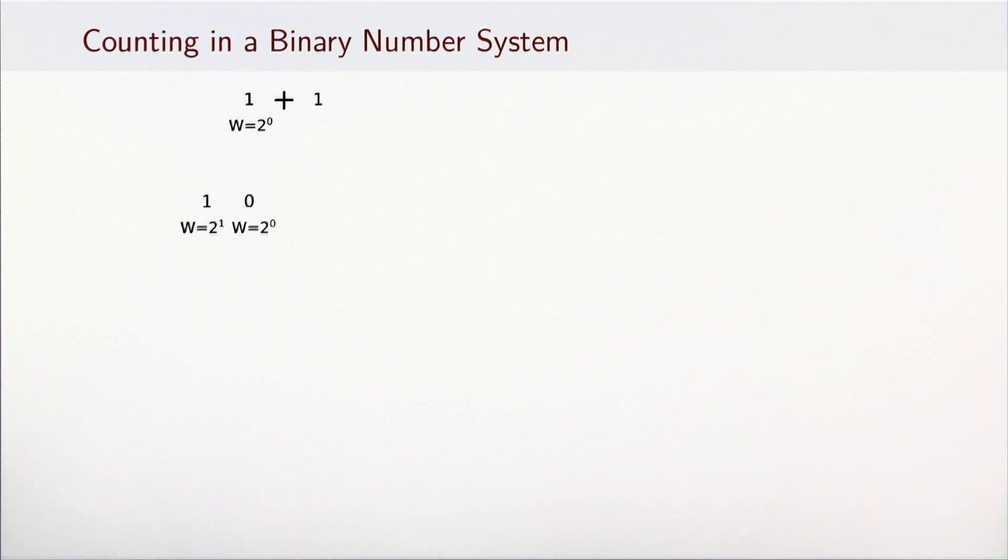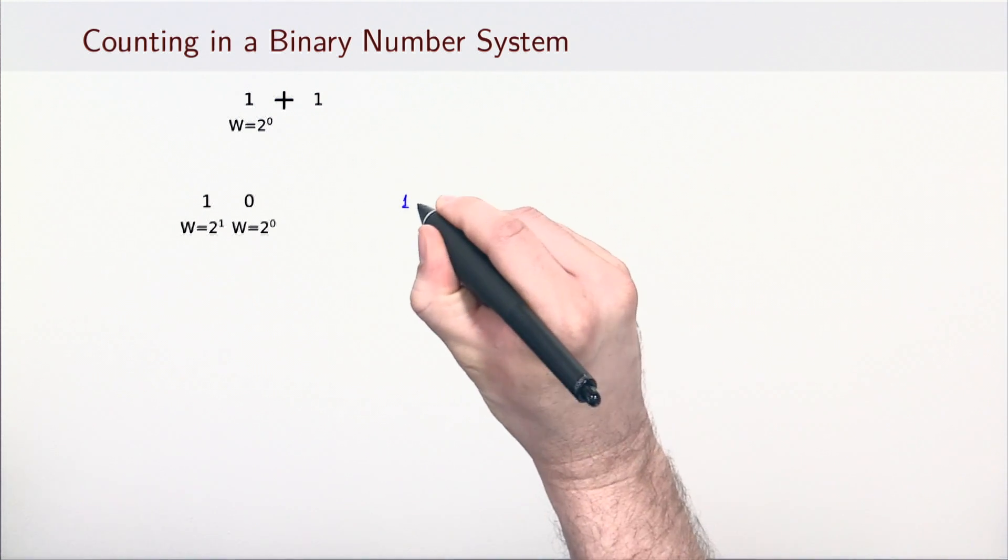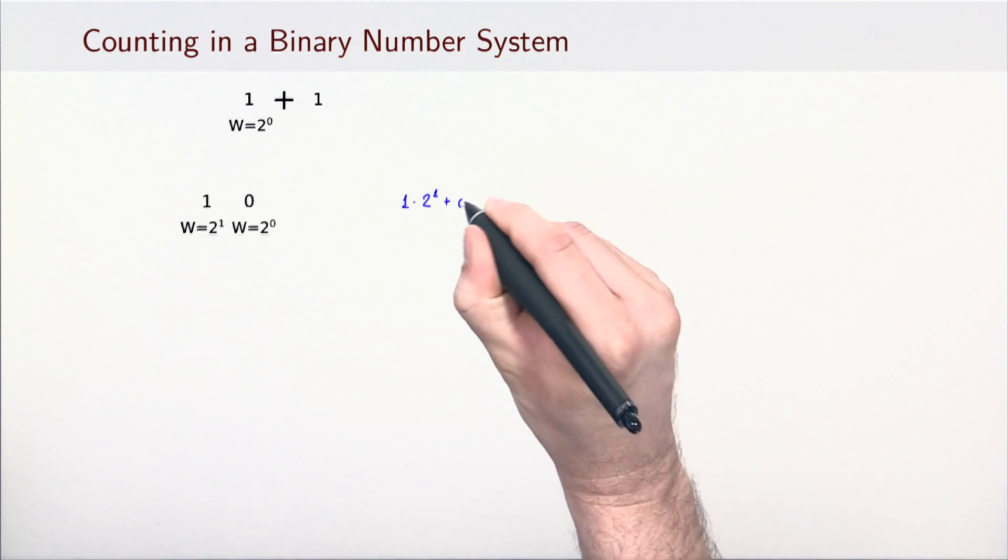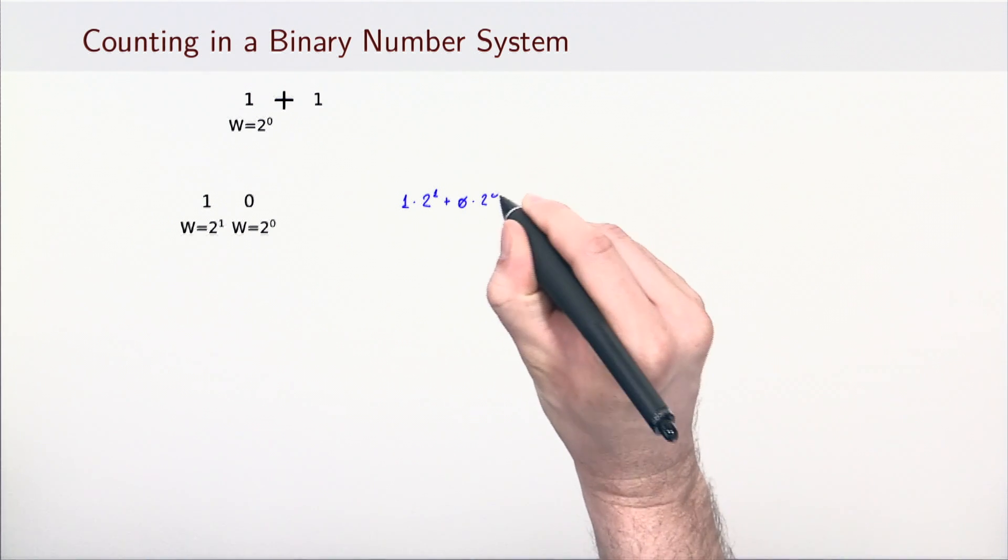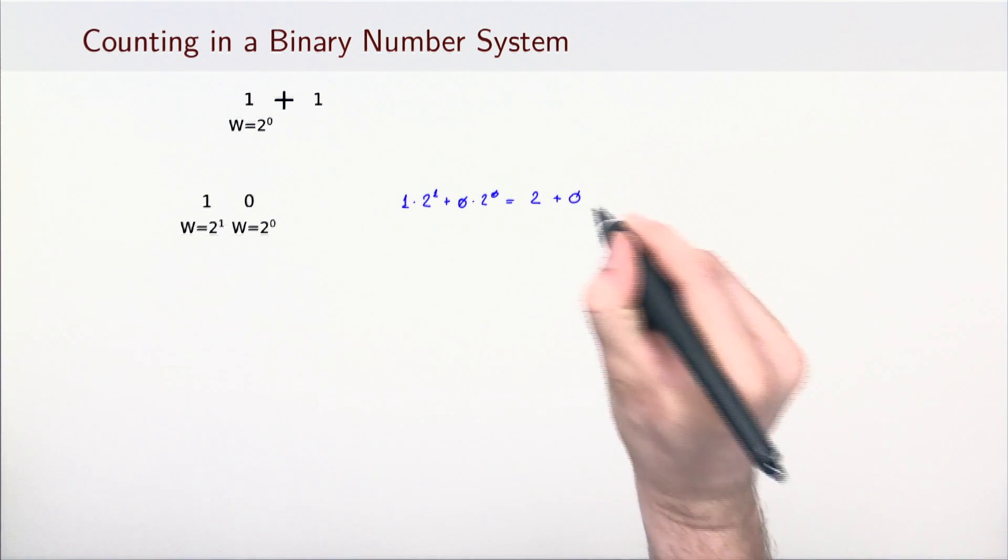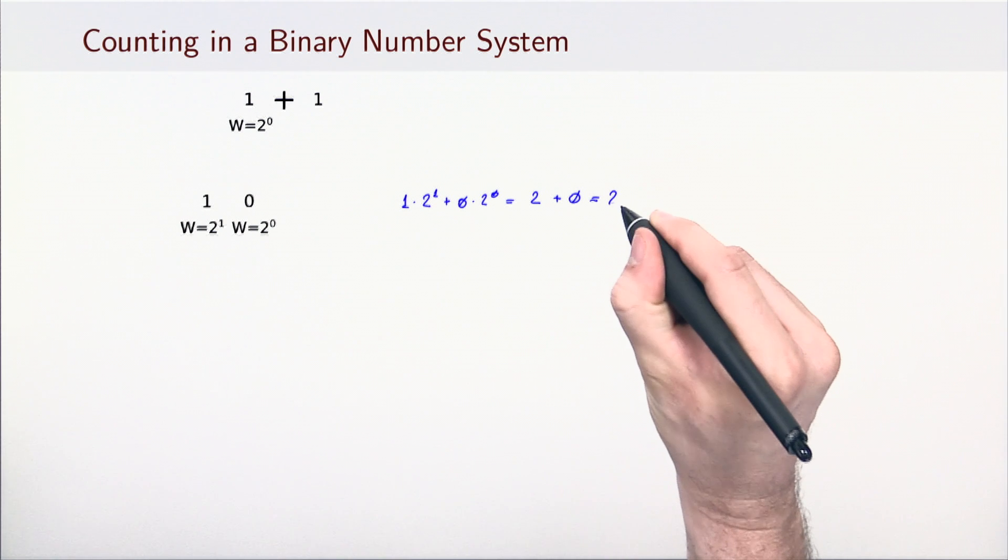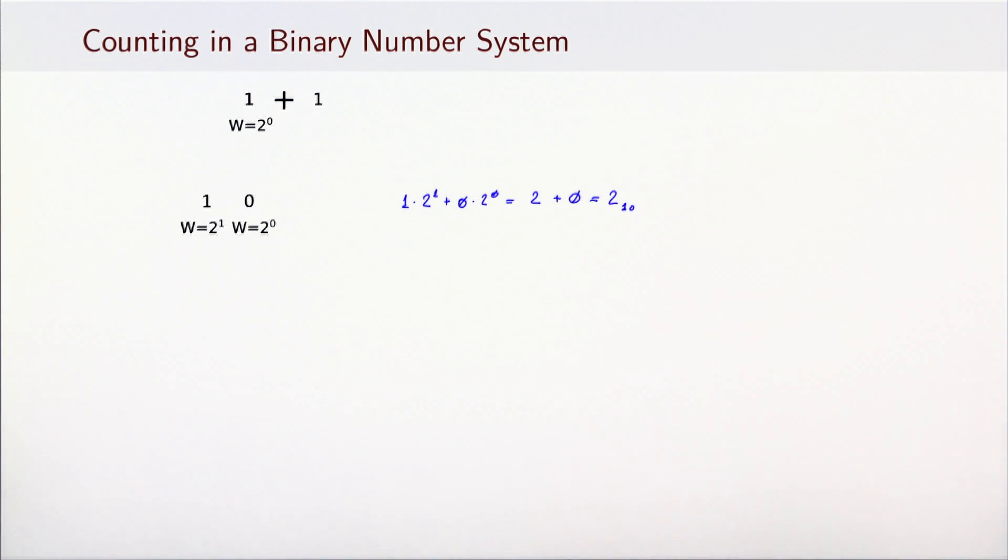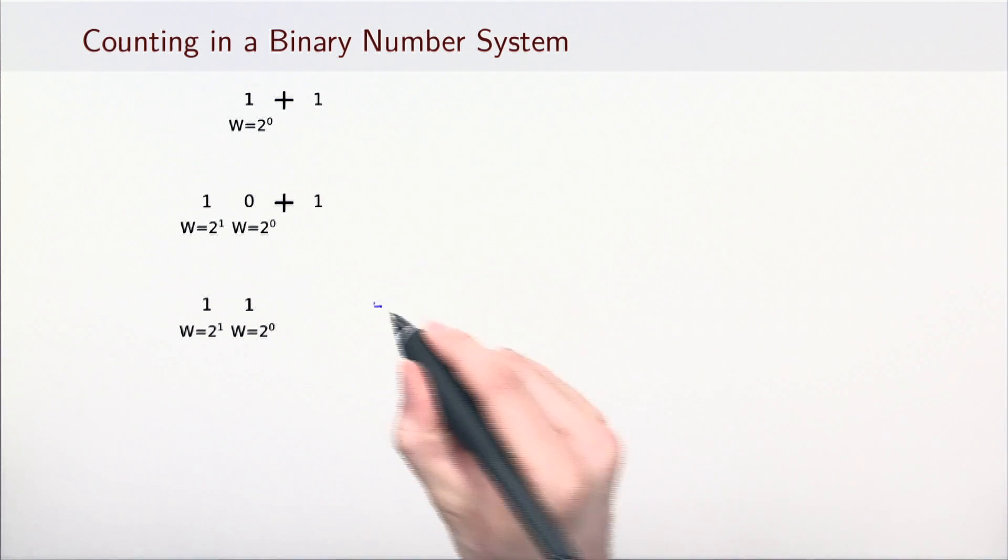If we again add 1 to this digit, we can no longer increment it. Instead, we carry the digit 1 to the next position with the weight 2 to the power of 1. To convert this number to the decimal system, we multiply 1 with 2 to the power of 1 and add it to 0 multiplied by 2 to the power of 0. This time, we get the number 2 in the decimal number system. We continue counting like this and increase the least significant digit again. We get the number 11, which corresponds to the decimal number 3.